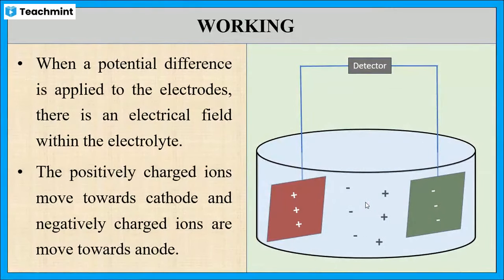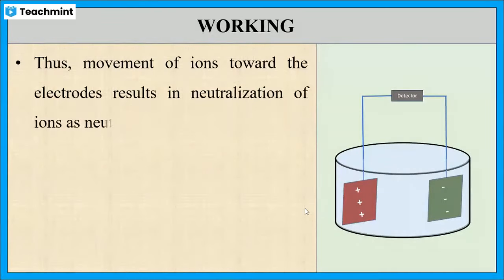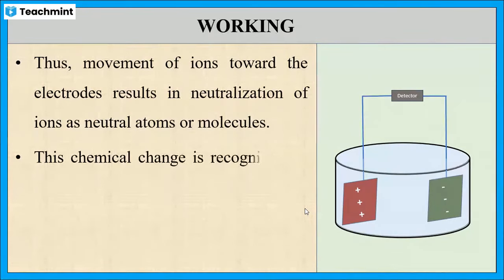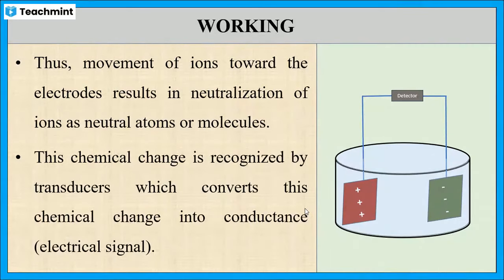The positively charged ions move towards the cathode and the negatively charged ions move towards the anode. This results in the neutralization of both types of ions and the formation of neutral atoms or molecules. This chemical change is recognized by the conductivity cell, which converts it into an electrical signal, which is conductance.